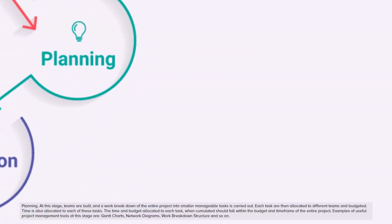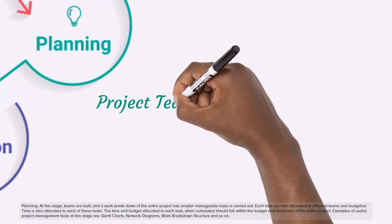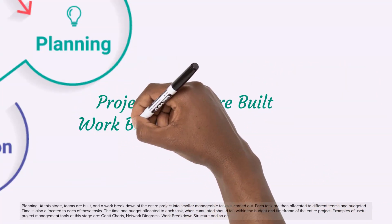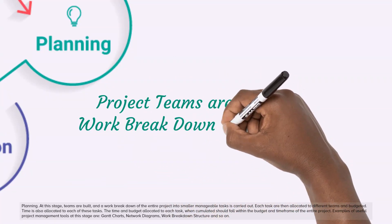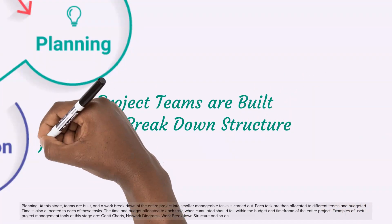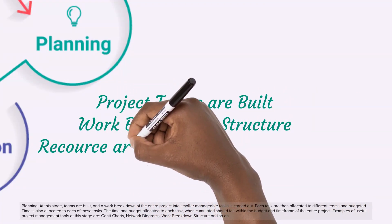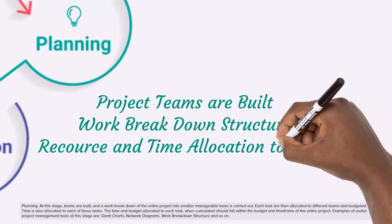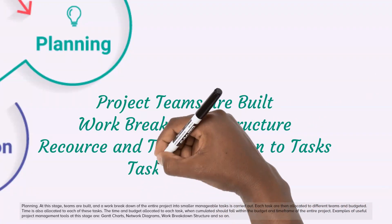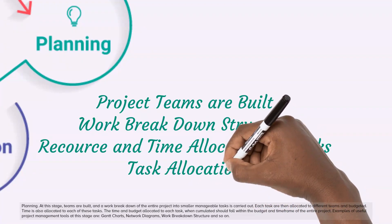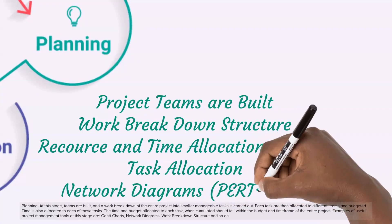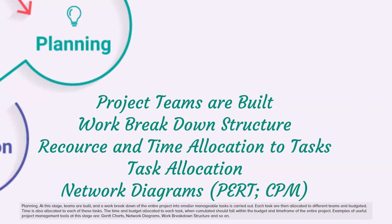Planning. At this stage, teams are built and a work breakdown of the entire project into smaller manageable tasks is carried out. Each task is then allocated to different teams and budgeted. Time is also allocated to each of these tasks. The time and budget allocated to each task, when cumulated, should fall within the budget and time frame of the entire project. Examples of useful project management tools at this stage are Gantt charts, network diagrams, and work breakdown structure.